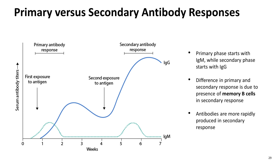The primary phase starts with IgM being expressed, while the secondary phase starts with IgGs. The difference between the primary and secondary response is due to the memory B cell response — antibodies are much more rapidly produced in a secondary response. The goal of a vaccine is to get your body into that secondary response in case you get exposed to a pathogen.